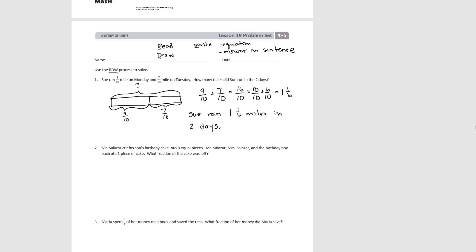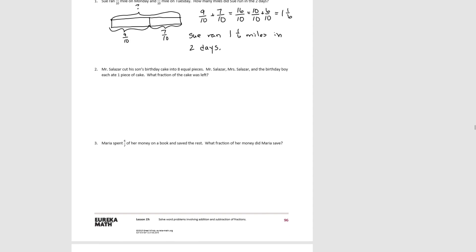Pause the video and read number two, and use the RWD process to solve it. Let's read the problem: Mr. Salazar cut his son's birthday cake into eight equal pieces. Mr. Salazar, Mrs. Salazar, and the birthday boy each ate one piece. What fraction of the cake was left? Let's draw a tape diagram and divide it into eight equal-sized pieces.